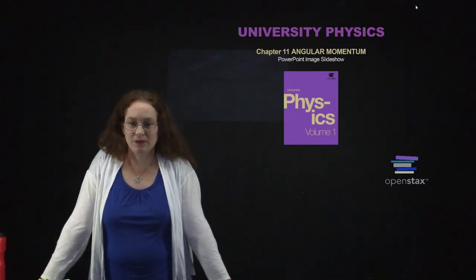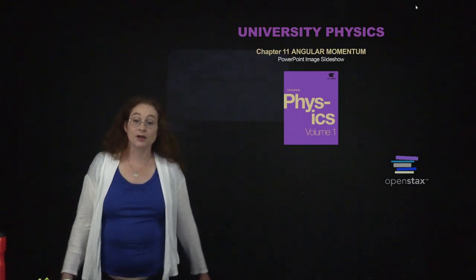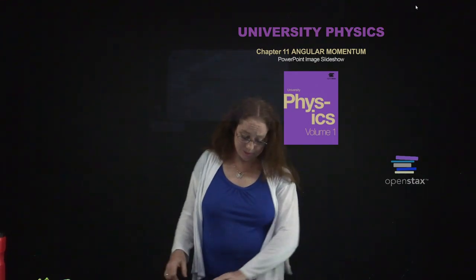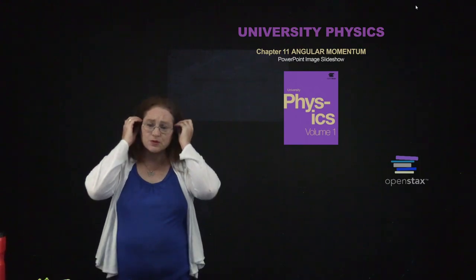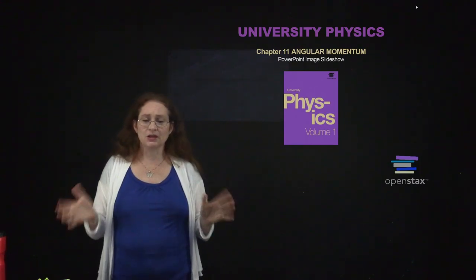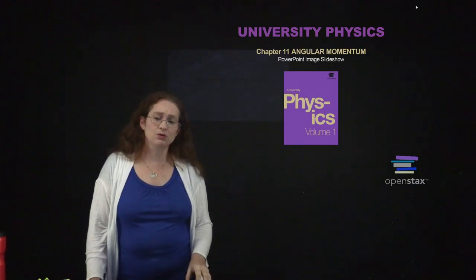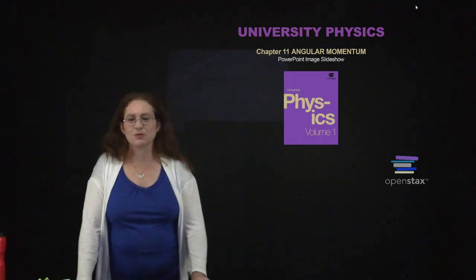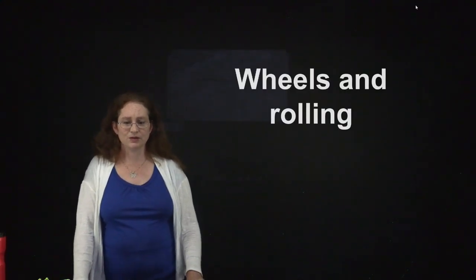We're moving on to angular momentum. This is the analog of linear momentum, but now we're talking about rolling. This is another one of those chapters that tends to be a little bit confusing for people when they encounter it the first time, so I encourage you to really sit down and spend some time with the material.